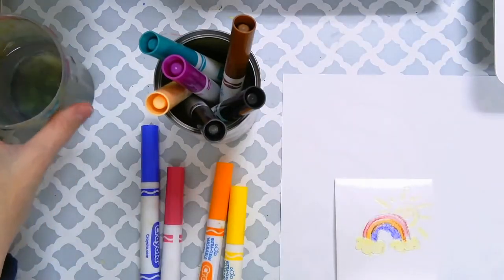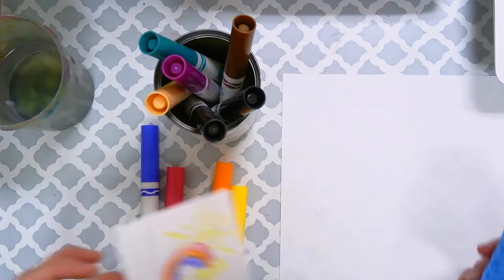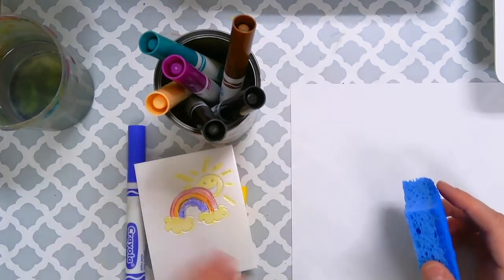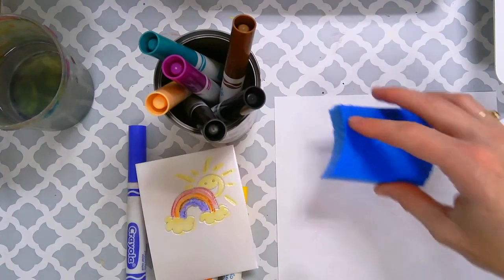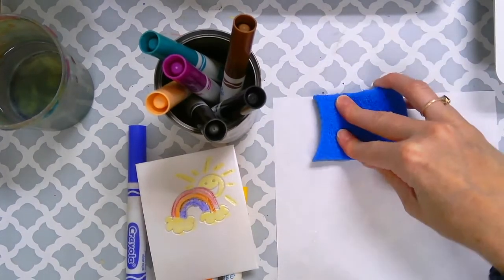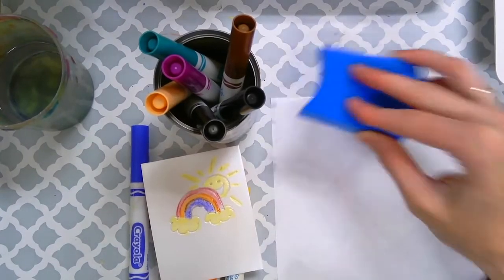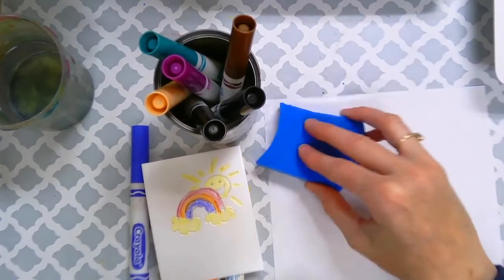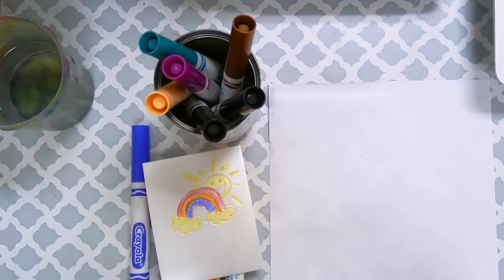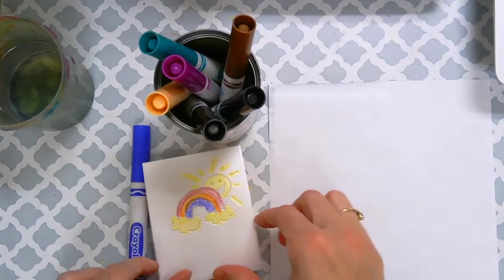Okay, so now you're going to think about where on your paper do you want to put your art print. So I'm going to put mine in this upper area and I'm just going to blot it. And you don't want to soak your paper, you just want to blot it.